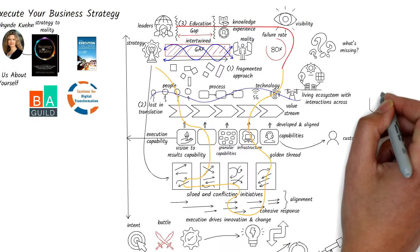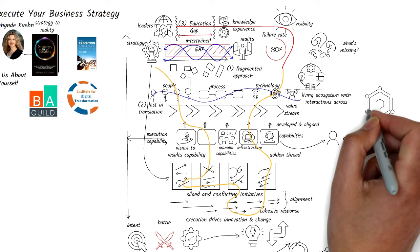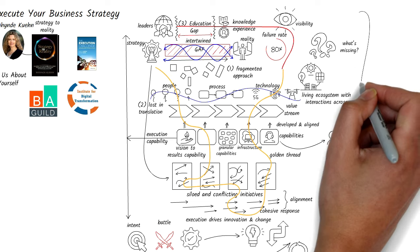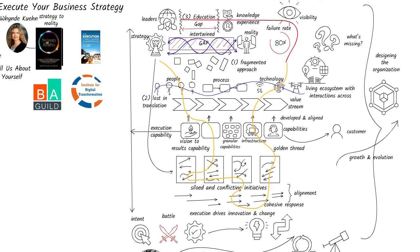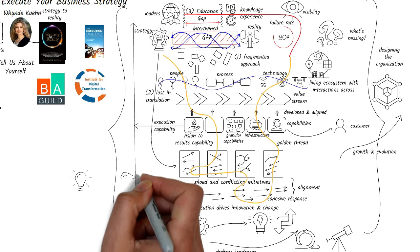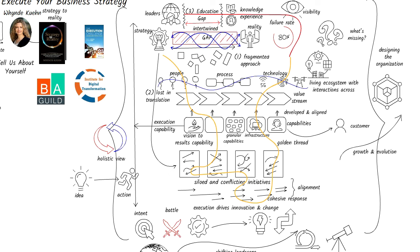Ultimately, successfully bridging the gap between strategy and execution relies on the intentional design of an organization. This design does not happen by chance. It requires deliberate decisions about structure, processes, experiences, culture, and capabilities. The design of an organization should not only be fit for purpose today, but also allow for growth and evolution into the future. By taking this holistic view, we can transform the way we think about and implement strategy. We can create a seamless continuum from idea to action, ensuring that every part of an organization is synchronized towards the achievement of shared goals.